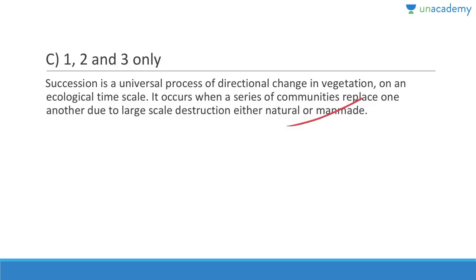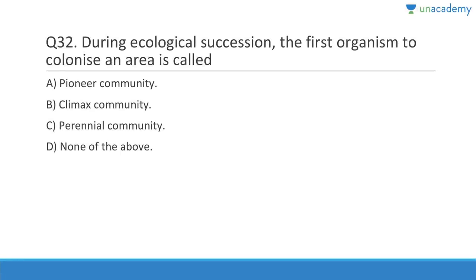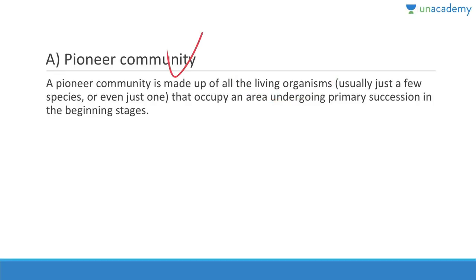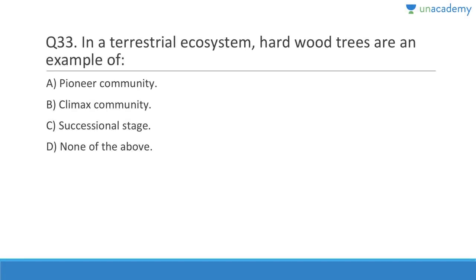Question thirty-two: During ecological succession, the first organisms to colonize an area are called pioneers. Lichens are an example. Pioneer species is a term for all the living organisms — usually just a few species or even just one — that occupy an area undergoing primary succession in the beginning stages. Question thirty-three: In a terrestrial ecosystem, hardwood trees are an example of climax community — the last stage, and unless there is some drastic change they will not be replaced.